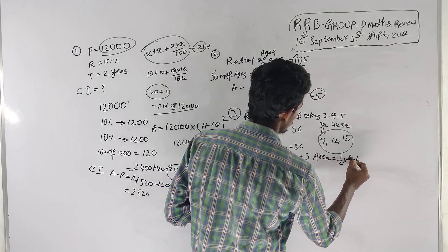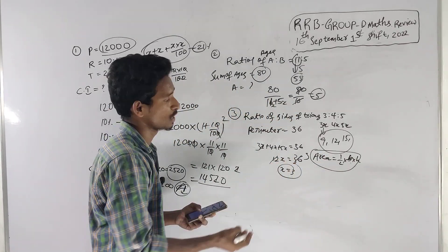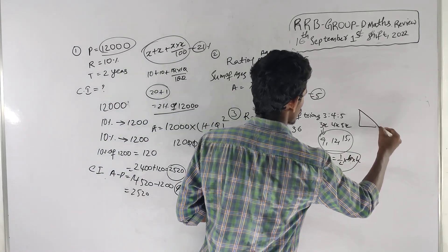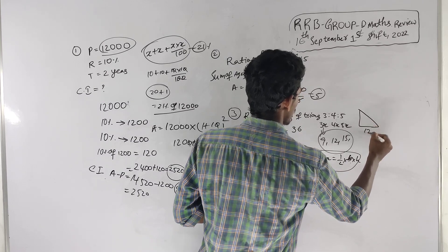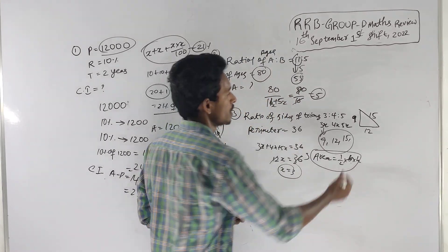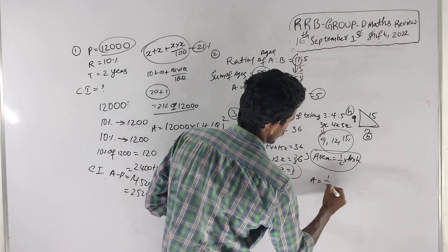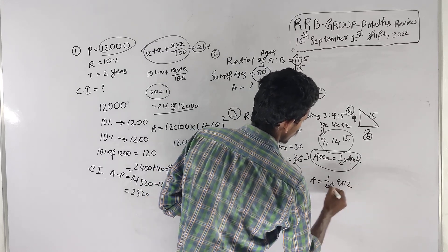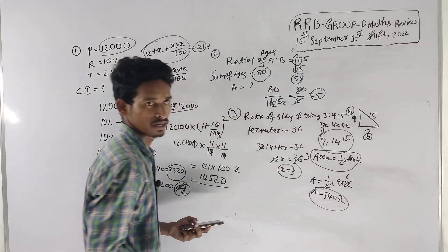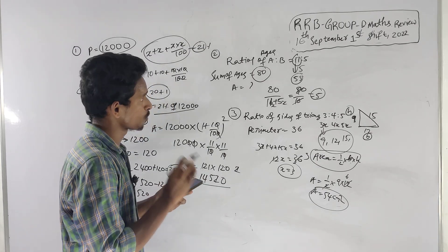For this right-angle triangle, the area of a triangle is equal to 1 by 2 times base into height. The base and height are the two shorter sides. Area is equal to 54 cm squared.